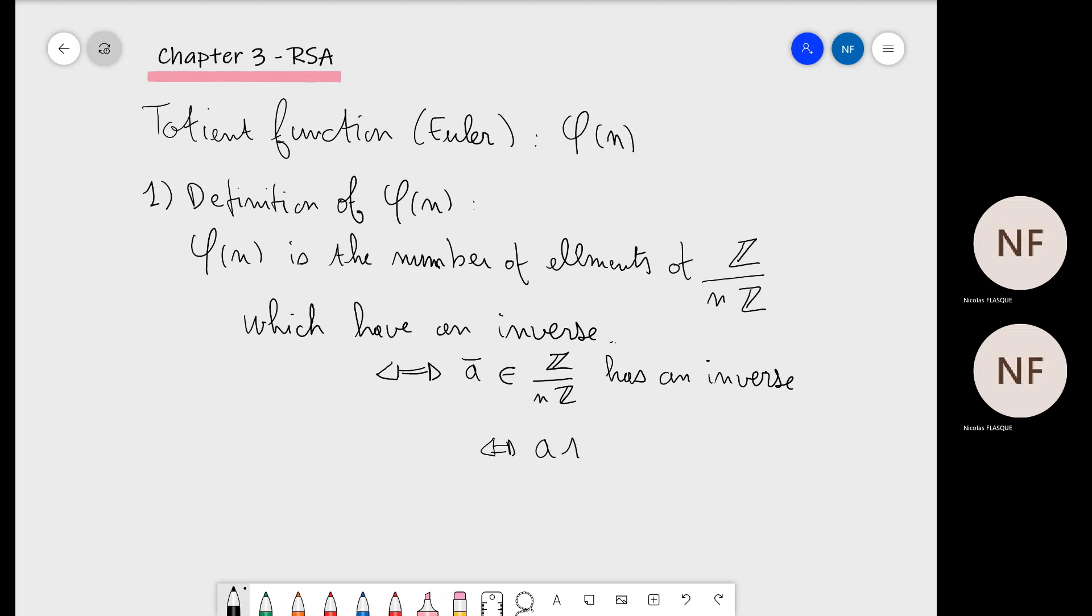...the gcd of a and n is equal to one. We can also write a second definition of phi of n, which is the cardinality (the number)...